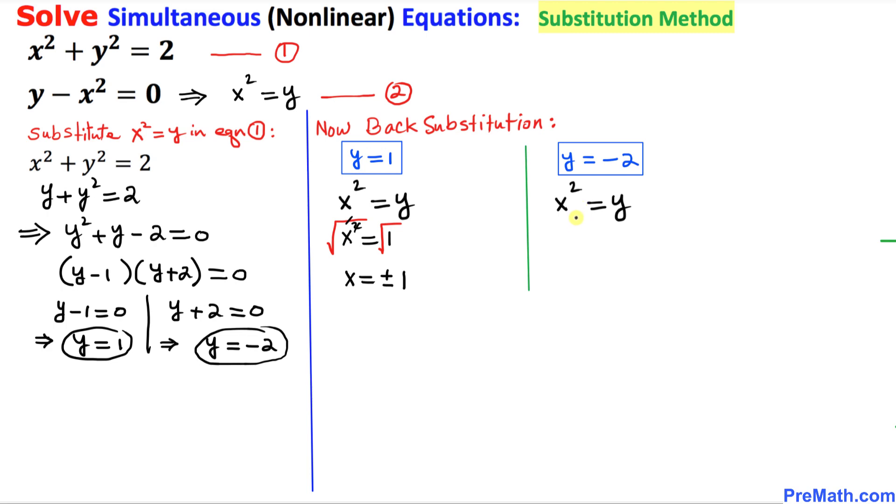And now let's go ahead and substitute y equals to negative 2 value. So x squared equals to negative 2 and once again we're going to take the square root we want to undo this square. So we take the square root on both sides.